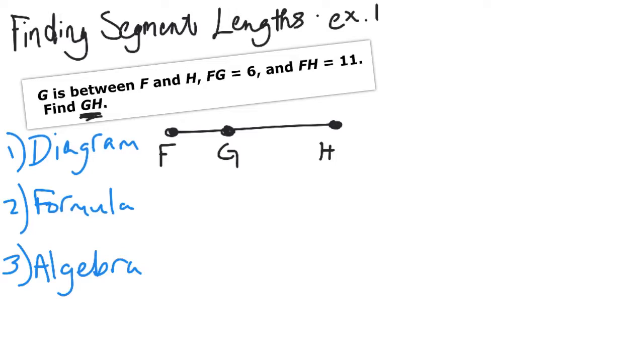Now we can go to the formula. We've got to think of what formula is going to be true for this. You might remember in class, we learned something called the segment addition postulate, which said the length from F to G plus the length from G to H is equal to that entire distance from F to H. So FG + GH = FH.